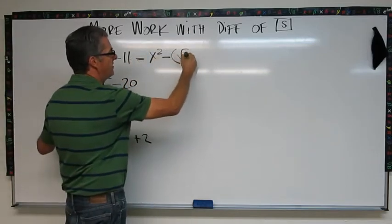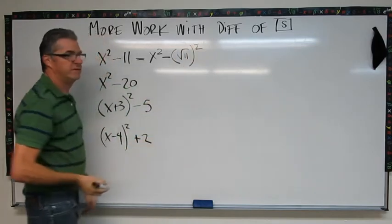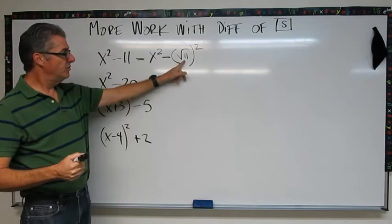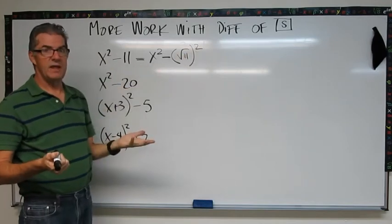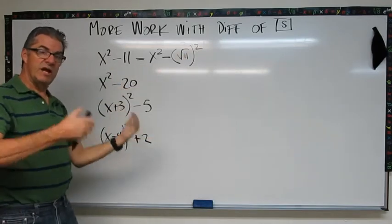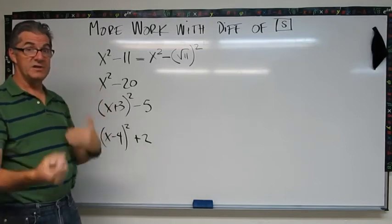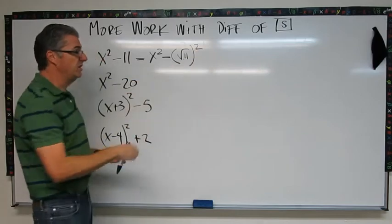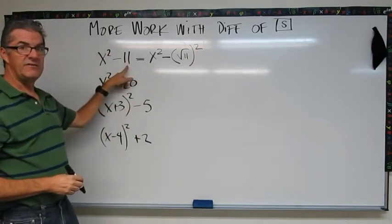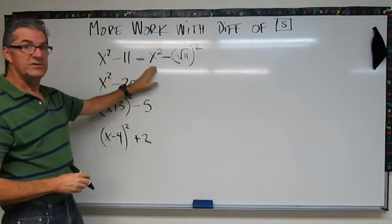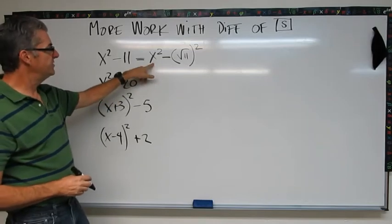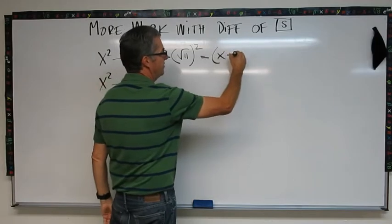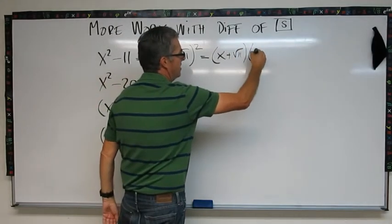Okay now that looks weird, but as you know, root 11 squared is just 11. Remember squaring and square rooting are inverse operations—one undoes the other. So if I take the square root of 11 and then square the result, I'm back here to 11. So now this looks like a difference of squares. I have one thing squared minus another thing squared, so this is going to give me x plus root 11 times x minus root 11.